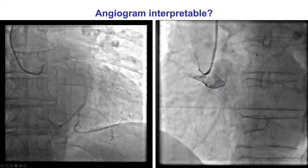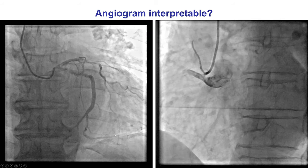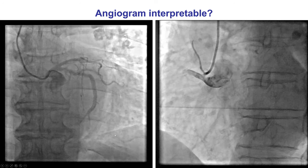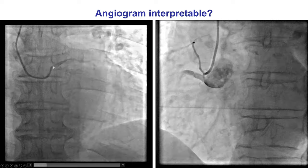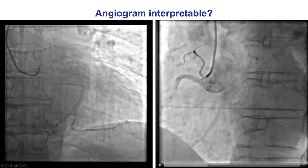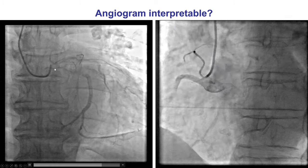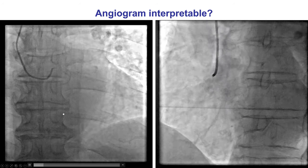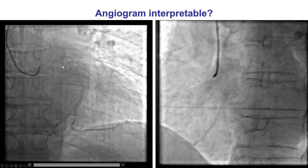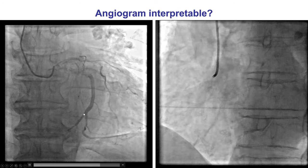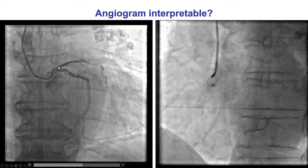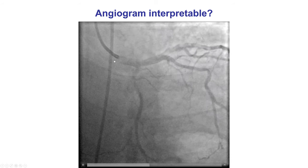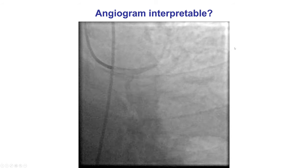The first question before proceeding with interpretation is to check whether the quality of the images is sufficient. Examples of angiograms of poor quality show poor filling of the coronary artery due to suboptimal engagement, making interpretation impossible due to incomplete opacification of the lumen. For the angiogram to be interpretable, there should be good opacification of the coronary artery, contrast returning into the aorta to check for osteal stenosis, and all coronary segments assessed in orthogonal projections.